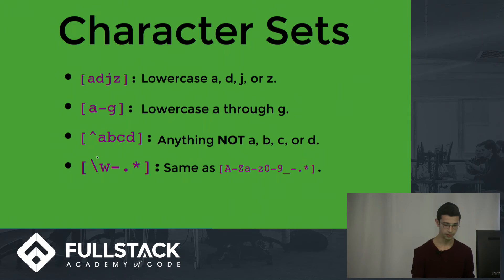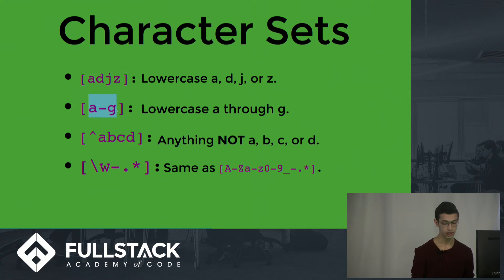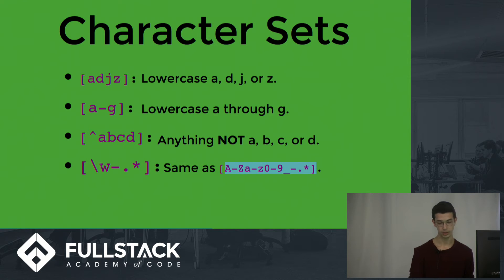Character sets let you say: at this point in my pattern, match anything as long as it's an A, D, J, or Z. You can also do a range like A through G. You can negate a set with a caret — meaning it can be anything except those characters. You can also combine things: it could be any alphanumeric character, a dash, a period, or a star. Using \w is the shorthand for writing out all those alphanumeric ranges.